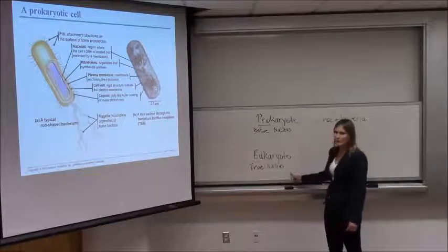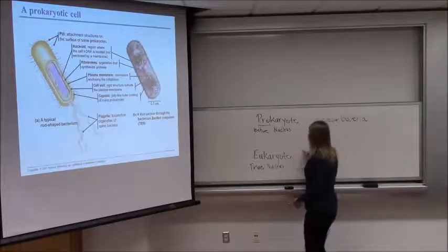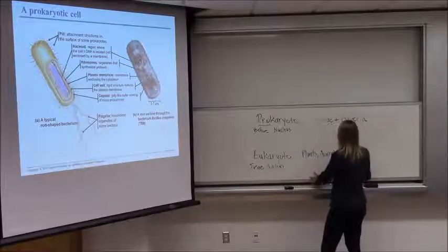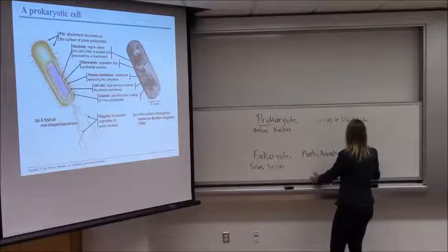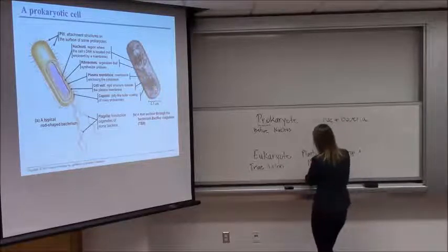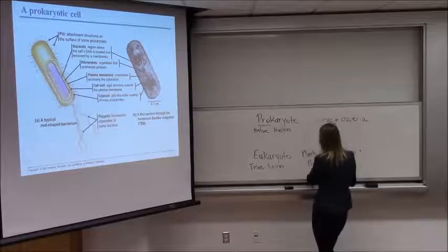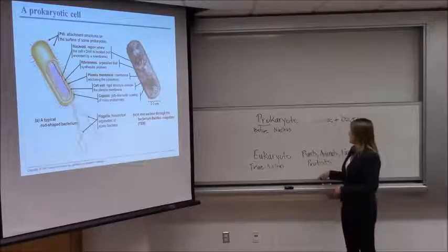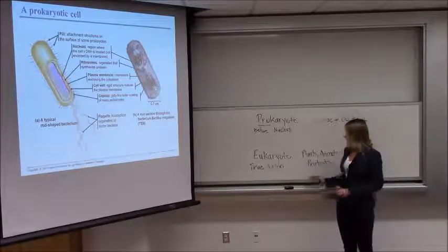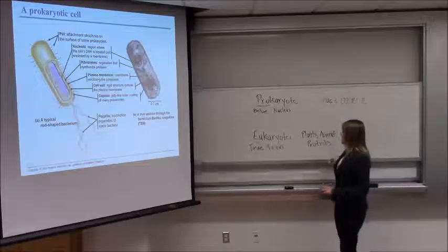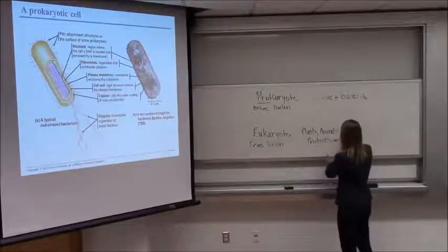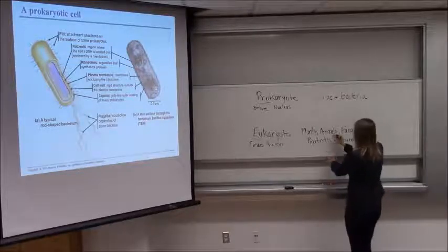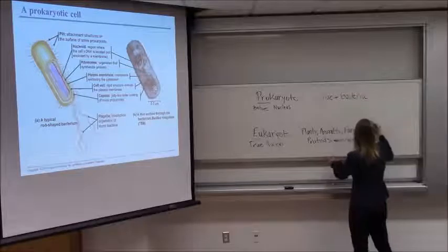Eukaryotes — true nucleus — include plants, animals, fungi, and protists. Protists are single-celled organisms that can be animal-like, plant-like, or a combination of the two. Eukaryotes are obviously much more diverse, and most of them are multicellular, except for the protists. Protists are the single-celled eukaryotes, while plants, animals, and fungi are for the most part multicellular.